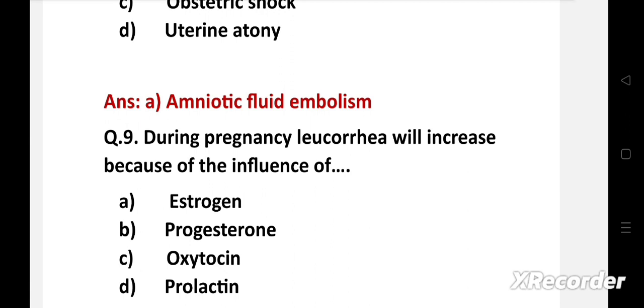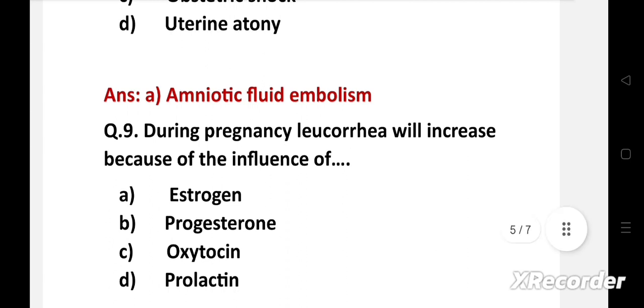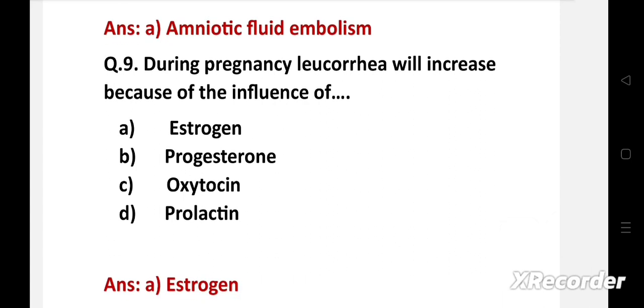During pregnancy, leukorrhea will increase because of the influence of: option a: estrogen, b: progesterone, c: oxytocin, d: prolactin. The right answer is option a, estrogen. Increased estrogen during pregnancy leads to hyperplasia of vaginal mucosa, which in turn increases the secretions by the endocervical glands.